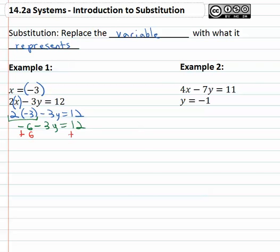And then solving the two step equation, adding six to both sides, negative three y equals eighteen, and finally dividing both sides by negative three, giving us y equals negative six.